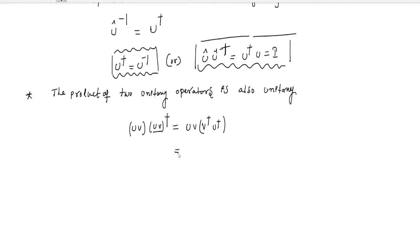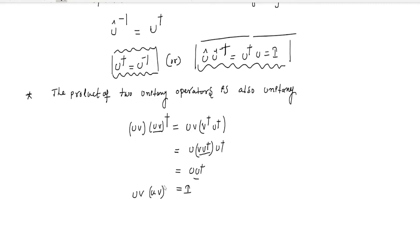Then we can write U·V·V†·U†. From the definition of the unitary operator, V·V† equals I, and U·U† also equals I. So the product of two unitary operators is also unitary.